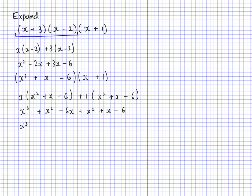So x cubed plus 2x squared. Now I have negative 6x plus x — from negative 6x, going up 1x gives me negative 5x. Then the negative 6 at the end — I don't have anything to simplify that with, so I have take away 6. The fully expanded and simplified answer is x cubed plus 2x squared minus 5x minus 6.